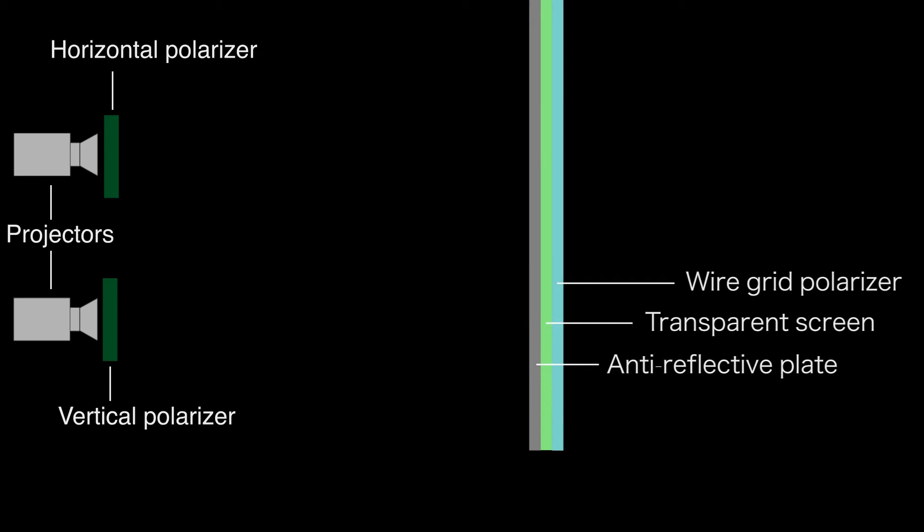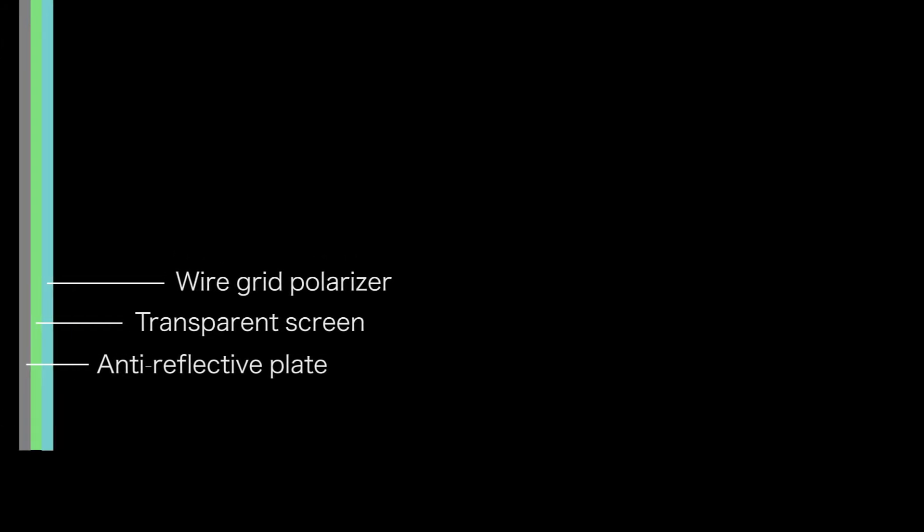The first layer is an anti-reflective plate. The second layer is a transparent screen. And the third layer is a wire grid polarizer. The key component of the screen is the wire grid polarizer.